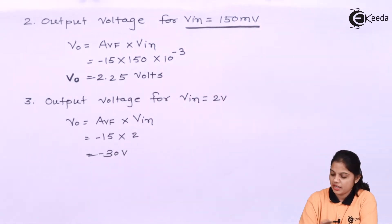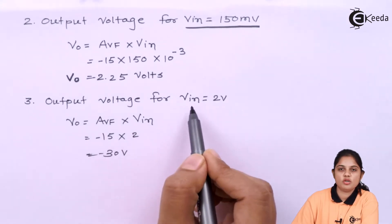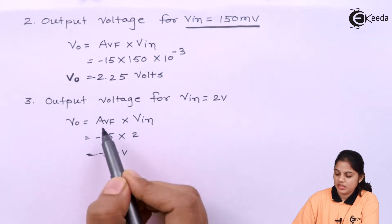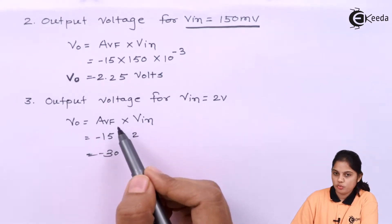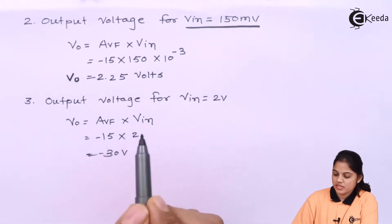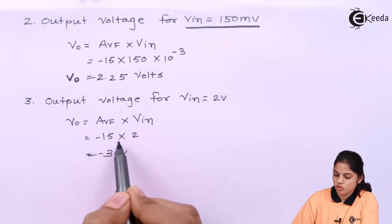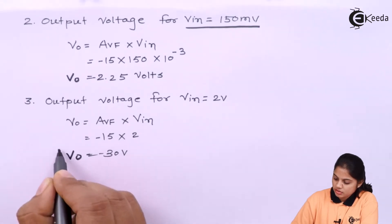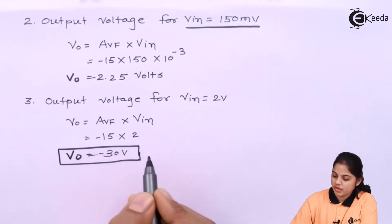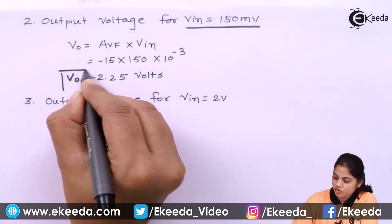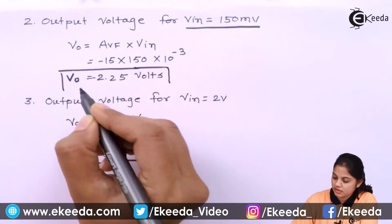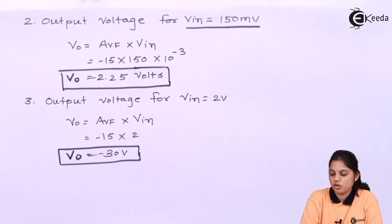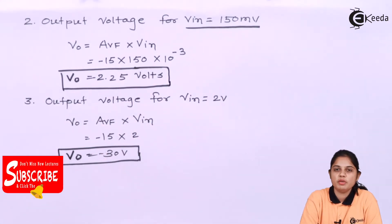Next we will calculate the output voltage for VIN equal to 2 volt. V0 is equal to AVF into VIN. AVF is equal to minus 15 and VIN is equal to 2 volt. So here V0 will be minus 30 volt. So we have calculated the output voltage values for the inverting amplifier for different input values: for 150 millivolt you get 2.25 volt, and for 2 volt the output voltage is minus 30 volt.